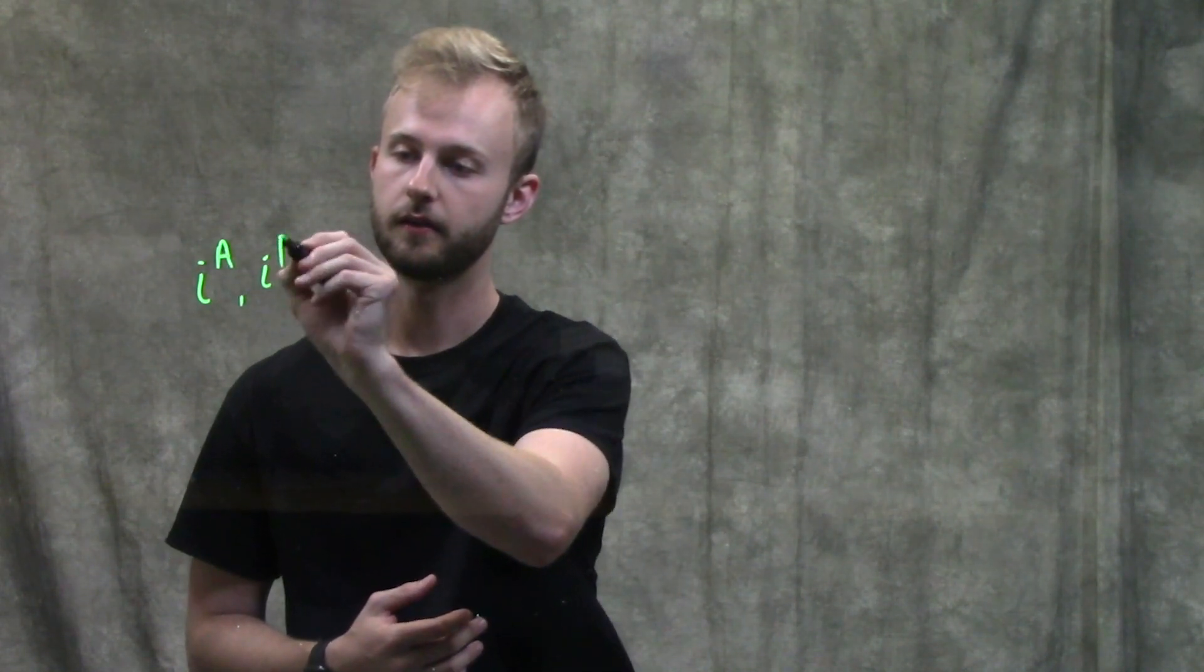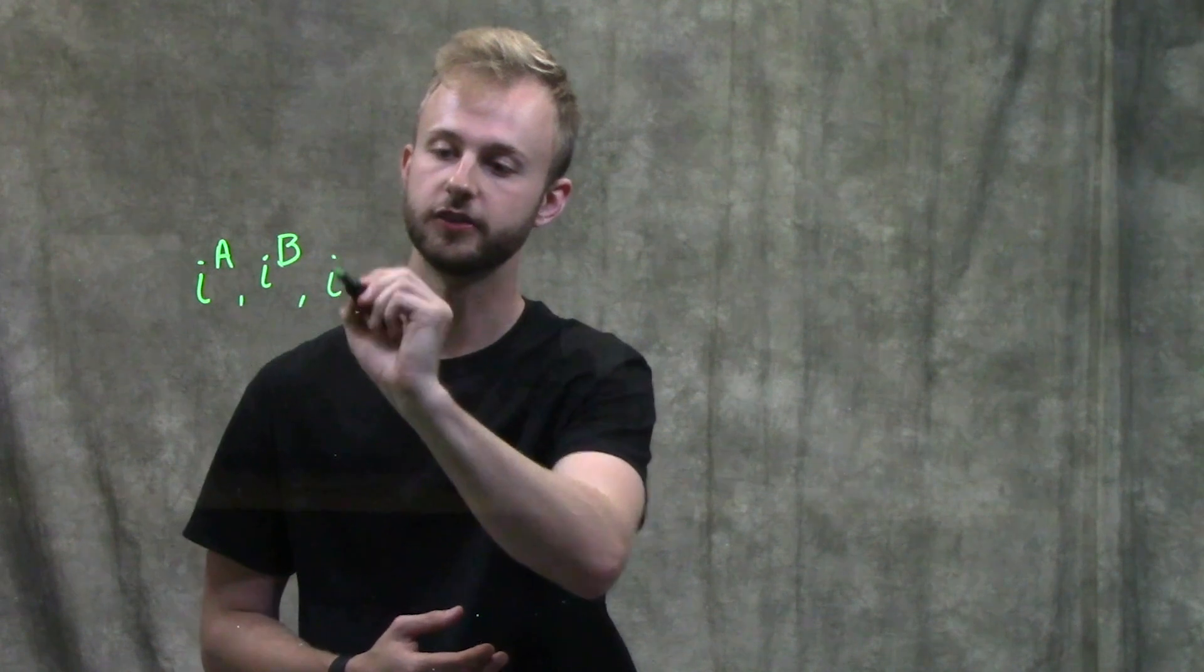So a really good example of a situation like this is our blood types. There's three alleles that can combine in different ways to give us our different blood types. So that's going to be Ia, Ib, and then just I.